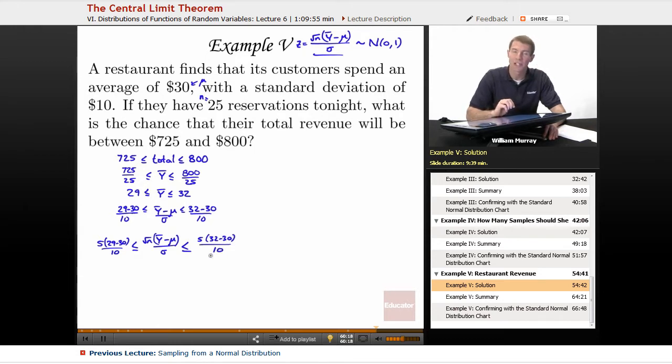And that actually simplifies fairly nicely, 5 over 10 is 1 half. 1 half times negative 1 is negative 1 half, so negative, I'll write that as negative 0.5. And then the point of this was we were building up a standard normal variable, so that's my z right there. This is between negative 0.5 and now 5 over 10 is still 1 half, 32 minus 30 is 2, so 2 times 1 half is just 1.0.